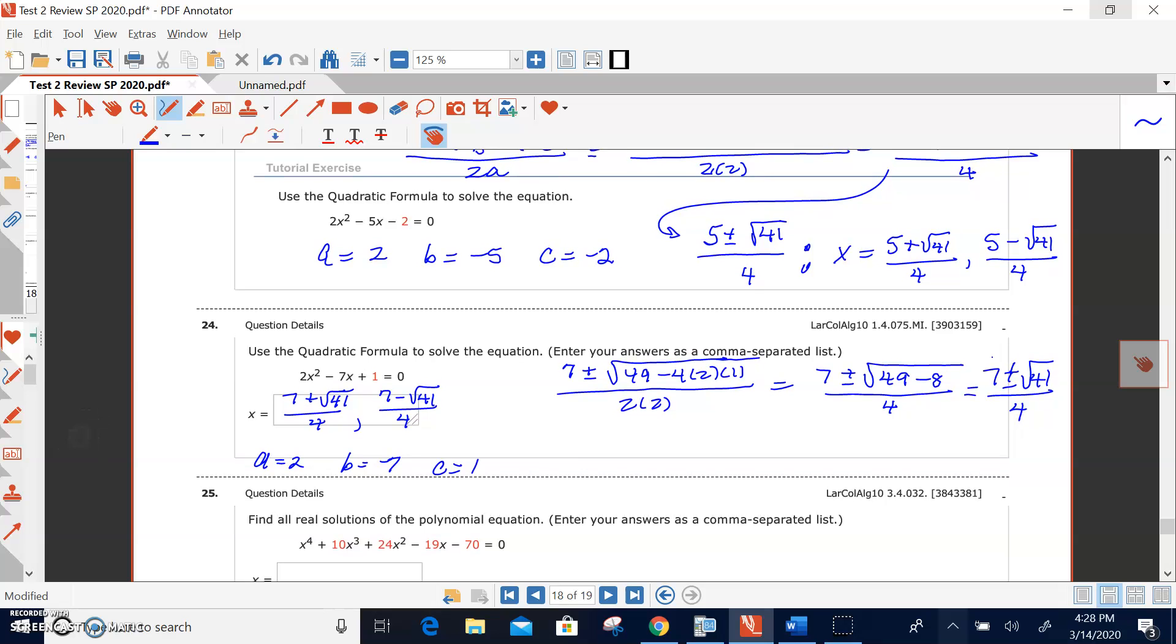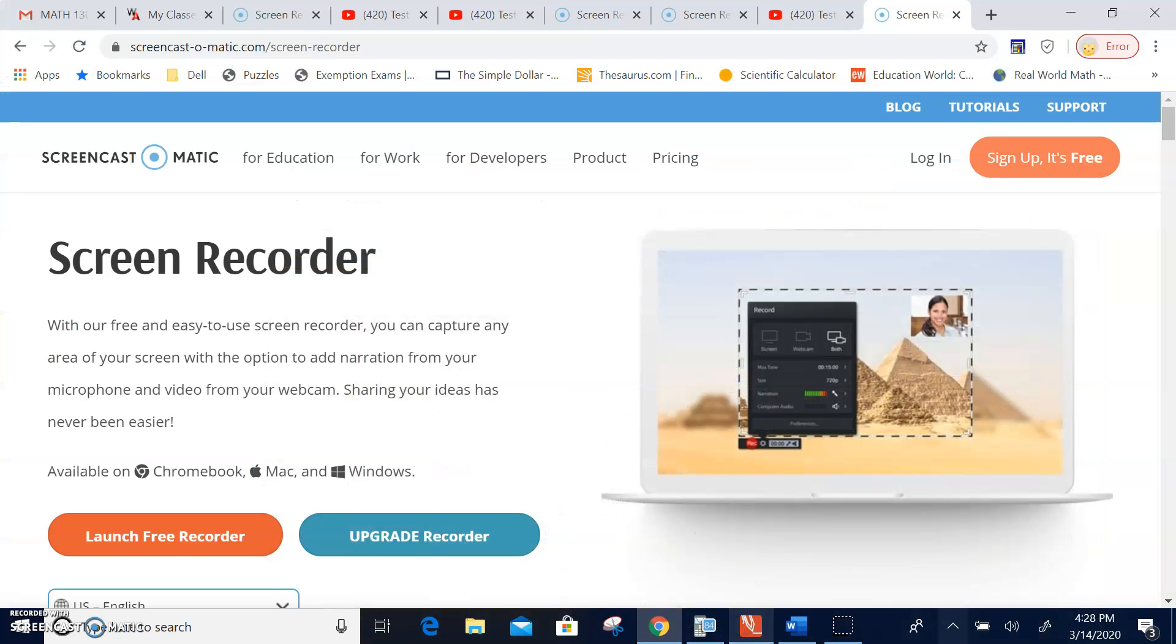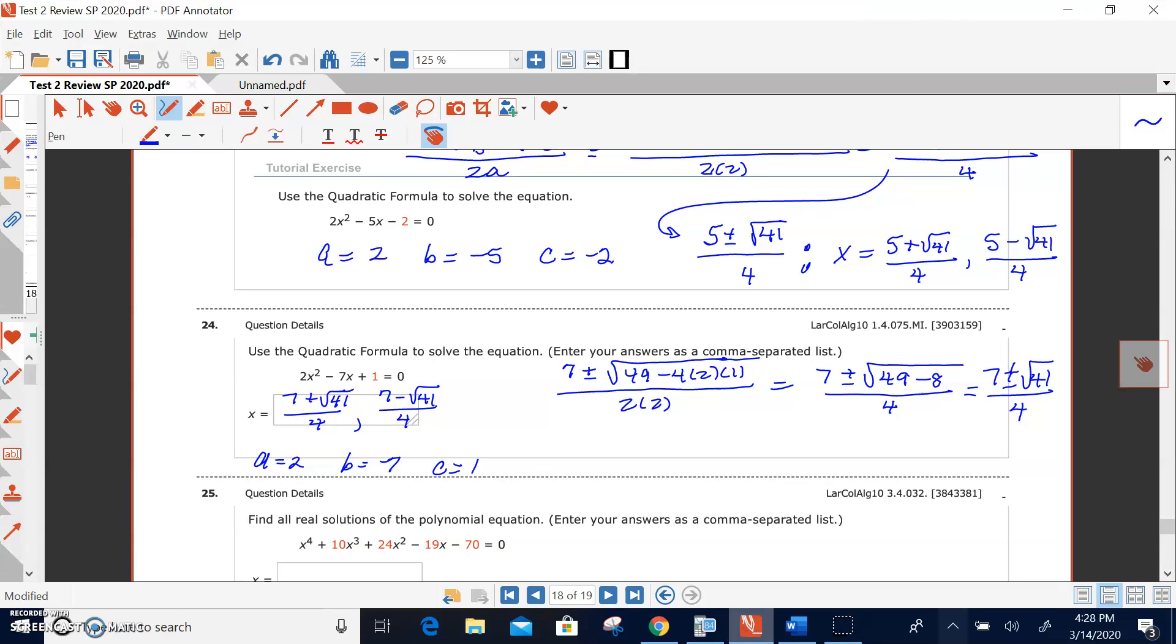24 quadratic formula, recognize the values of a, b, and c, 2, negative 7, and 1, place them in the formula, do some simplifying, and then write your two answers. It says, as a comma separated list, so you've got to write that as a comma, write a comma between those.